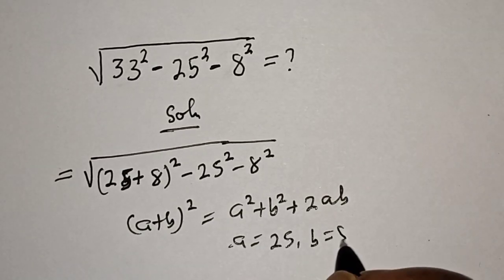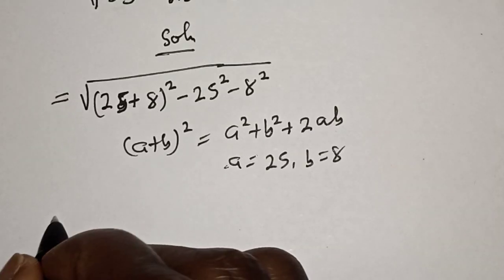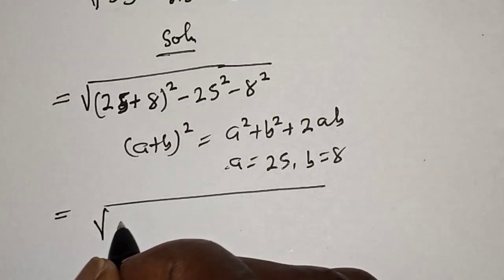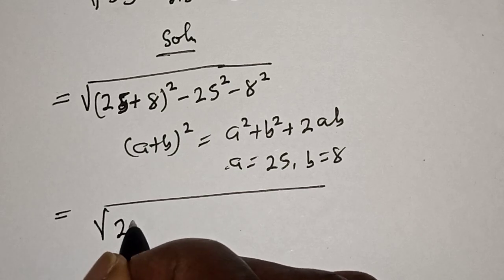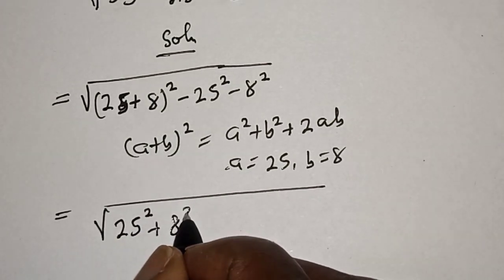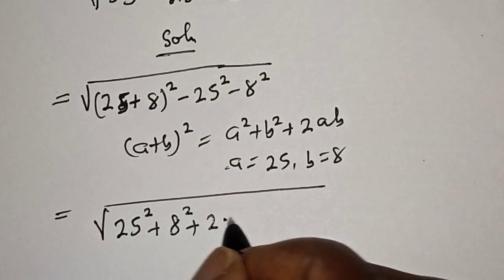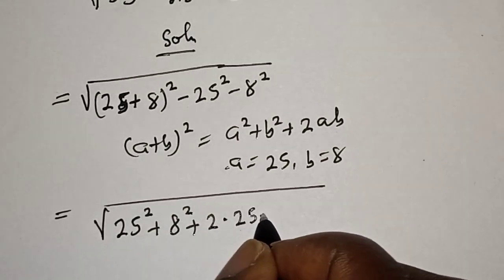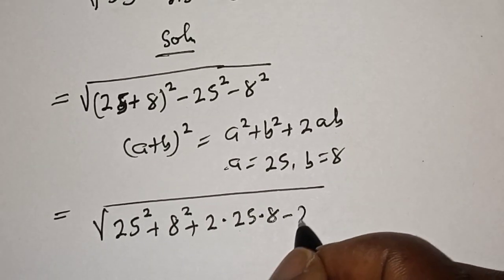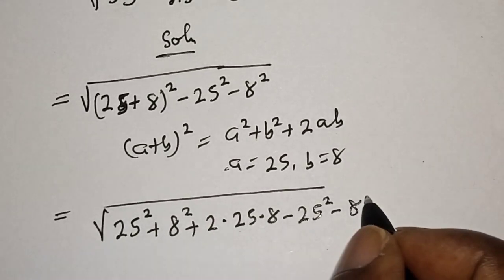And b is equal to 8. So this becomes square root of: a squared is 25 squared, plus b squared is 8 squared, plus 2 multiplied by 25 multiplied by 8, minus 25 squared minus 8 squared.